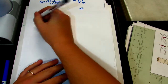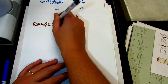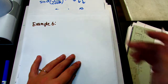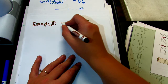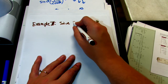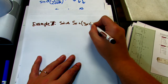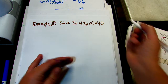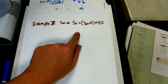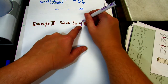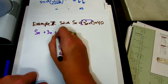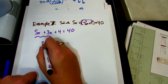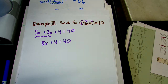I have one more example to walk through. Example 7: solve 5x plus the quantity 3x plus 4 equals 40. Again, we use the distributive property to get rid of the parentheses, and we're distributing a positive 1 this time. So we get 5x, 1 times 3x is 3x, and 1 times 4 is 4. Combining like terms: 5x plus 3x is 8x, so 8x plus 4 equals 40 — a two-step problem.